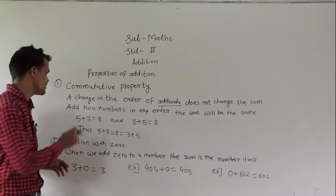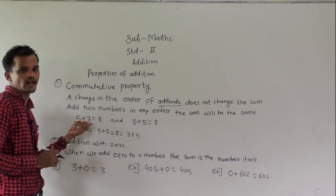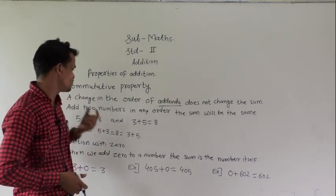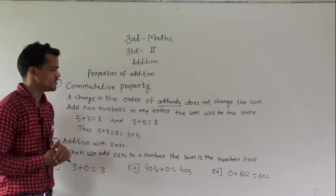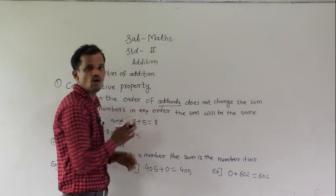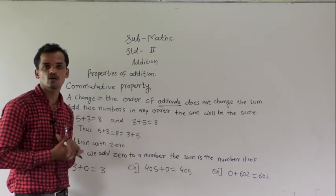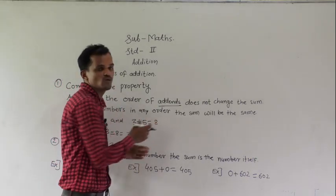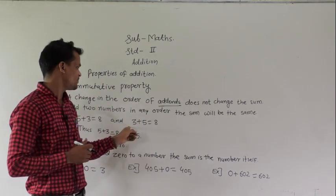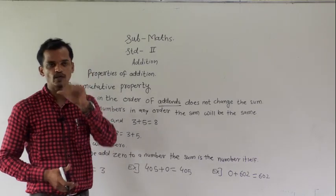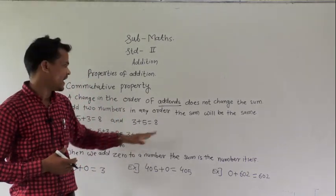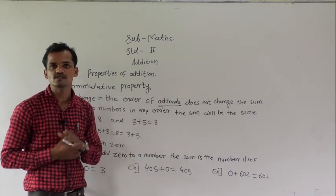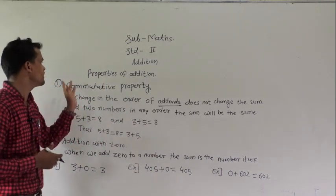See the example so you will understand. 5 plus 3 — these two numbers we are adding — 5 plus 3 is equal to 8. Now I change the order of the addends: here first I wrote 3 and then 5. So the order is changed but the answer is still the same. 3 plus 5 is equal to 8. This means if we change the order of the addends, the result remains the same. This is the commutative property.